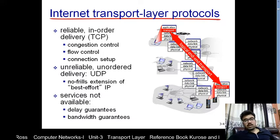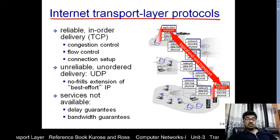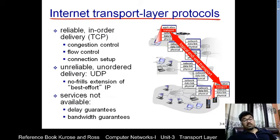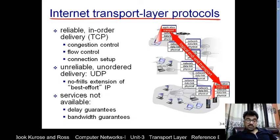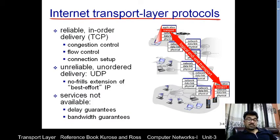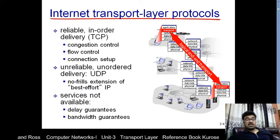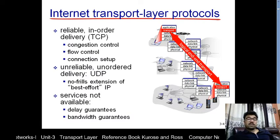TCP is used by elastic applications, while UDP is used by applications that require fast communication. UDP provides fast communication but does not guarantee delivery of data. It is completely up to the application to decide which type of service is required, and that type of service is provided by the transport layer.